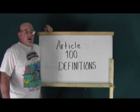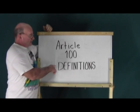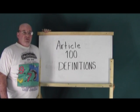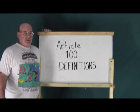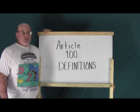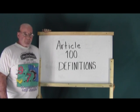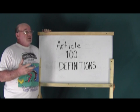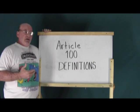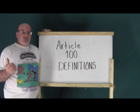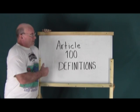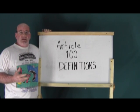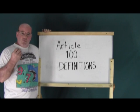We move on to Article 100, definitions. They're important because if you don't understand all the electrical definitions, you can't understand the code book. Think of it as a novel where you only know 10% of the words — the novel's not going to mean much. So it's very important that we go over these so you have a full understanding of the code when you read it.